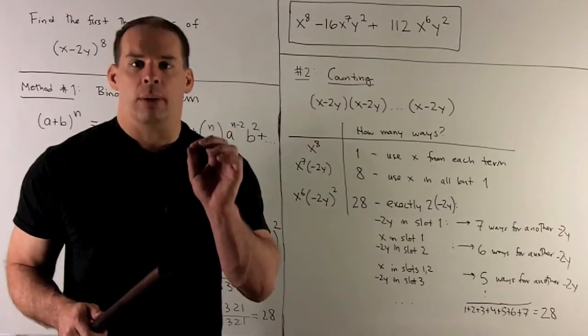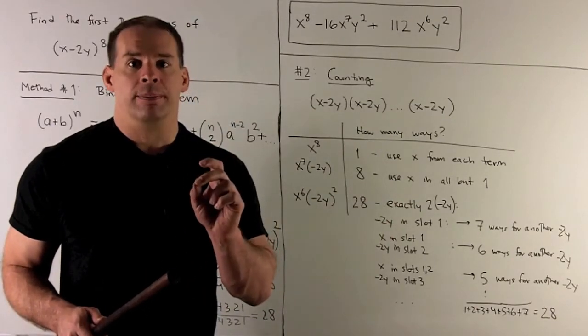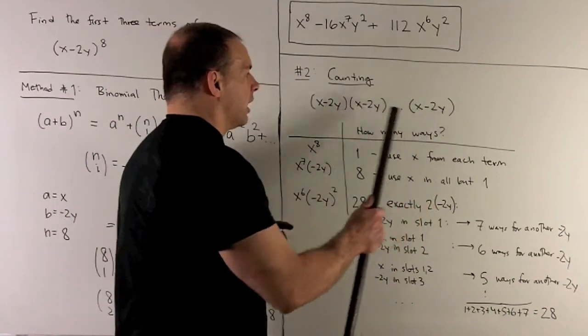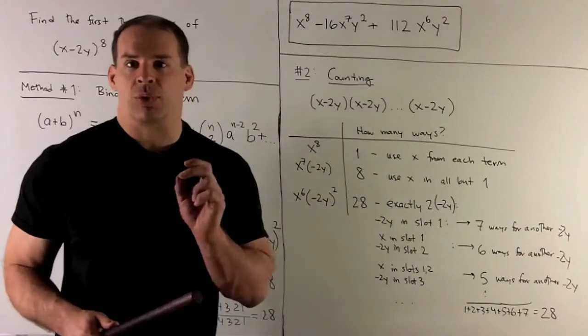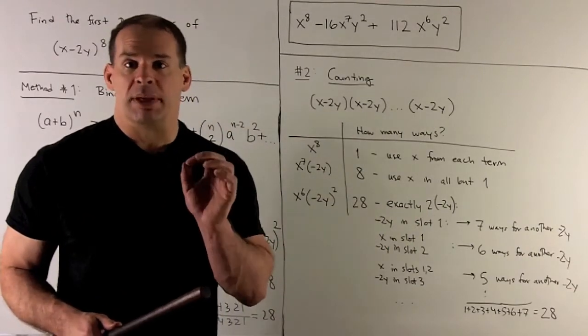So, I only want exactly one more -2y. So, there are going to be seven spots left, and we're going to choose exactly one from them seven spots. And then we fix the rest as x. So, that means I have seven choices.